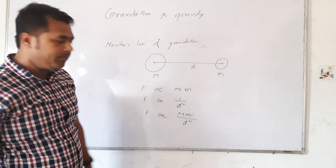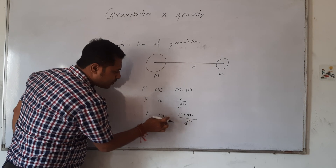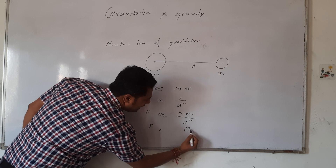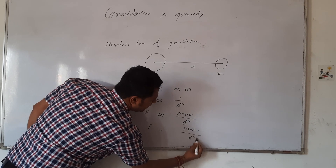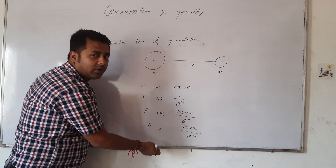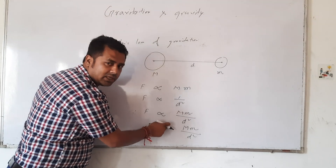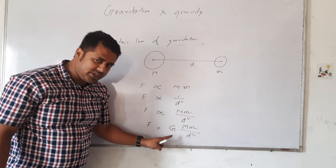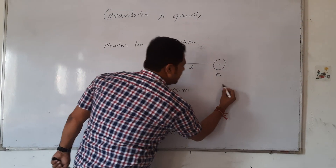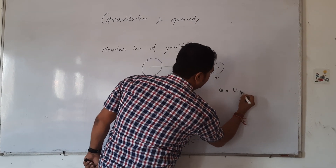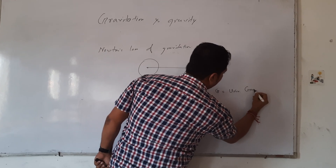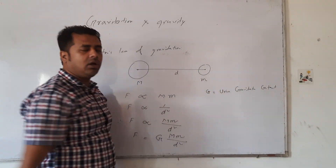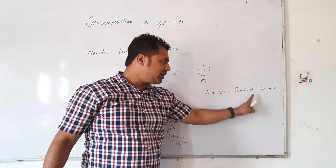So F is proportional to M m by d squared. To remove the proportionality sign, we introduce a constant. This constant is capital G. So F is equal to G times M times m divided by d squared. And capital G is called the Universal Gravitational Constant.